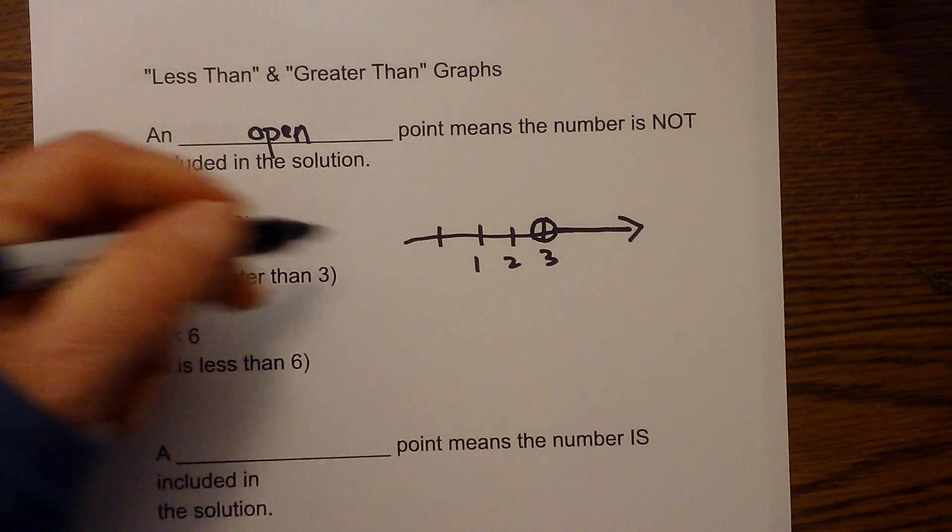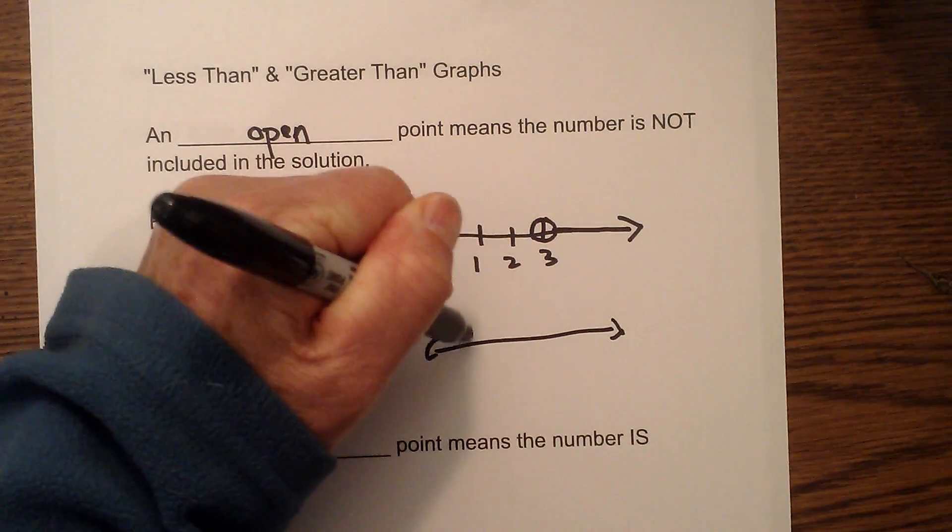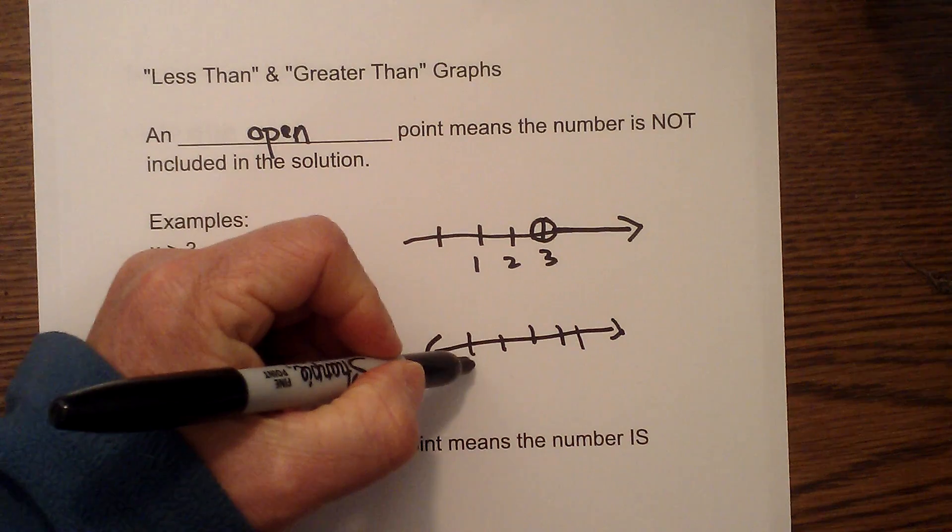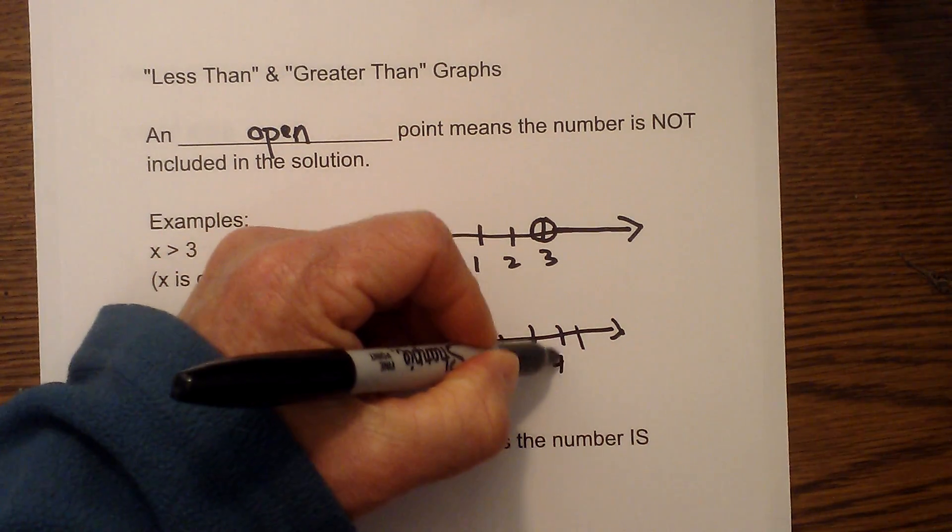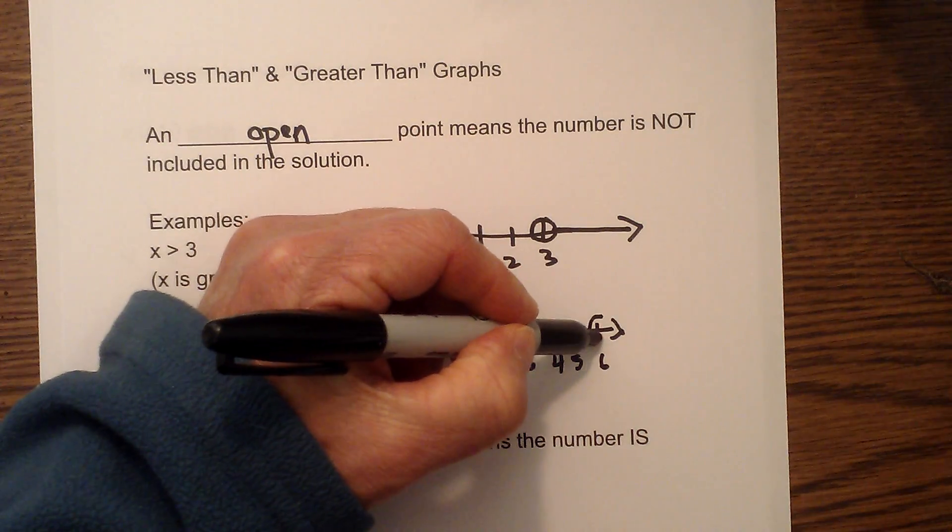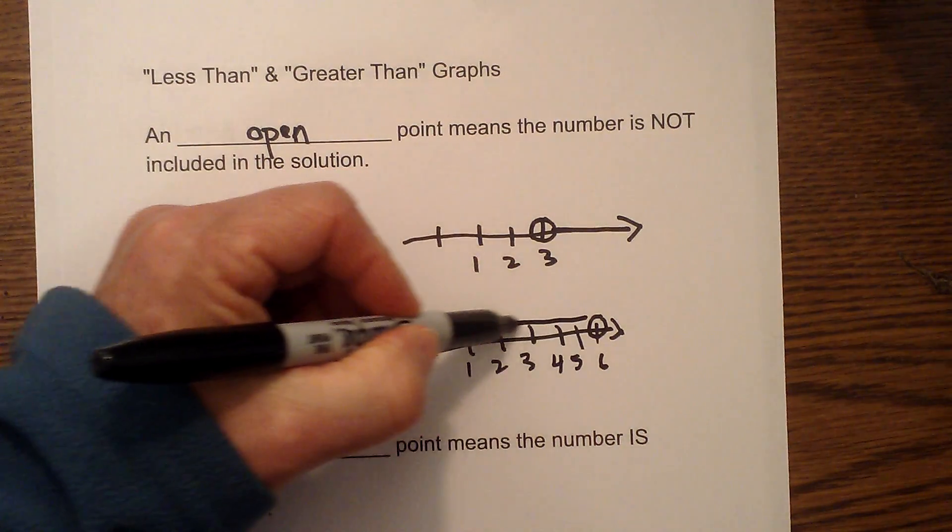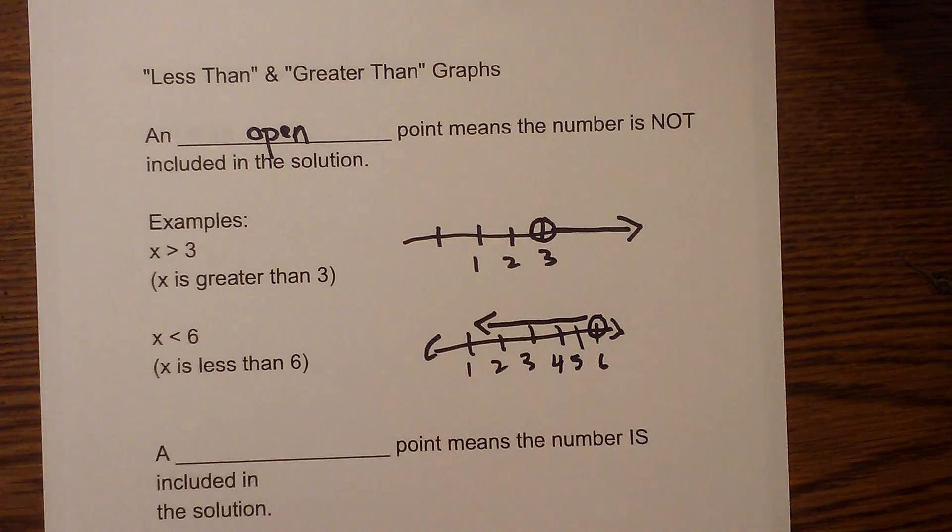Next we have x is less than 6, so we have another number line. We have 1, 2, 3, 4, 5, 6, so again we draw it as open, and then it is going to be less than 6 to be drawn in that direction.